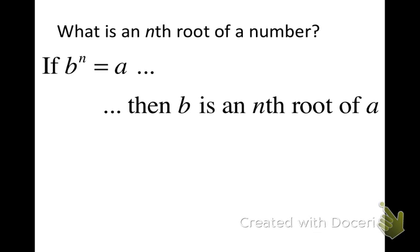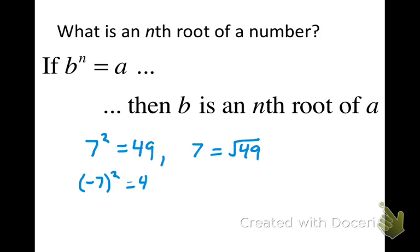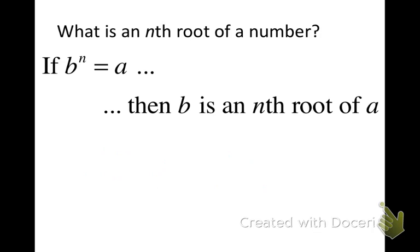When talking about roots, you're used to square roots. If seven squared is equal to 49, then seven is equal to the square root of 49. Similarly, negative seven squared is also equal to 49, so negative seven is a square root of 49 — the negative square root. If a number to the second power gives you something, that first number is a square root of the second number. We'd like to extend that idea beyond square roots.